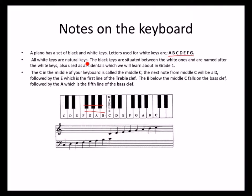All white keys are called natural keys. The black keys are situated between the white ones. The black keys are named after the white keys. For example, this is called the middle C. The first black note after the middle C is called C sharp — named after the C. This note is called D sharp, named after the natural D, when going up.